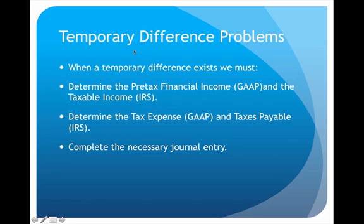Anytime we have a temporary difference there are three main things we have to do. First, calculate income in two versions: pre-tax financial income according to GAAP and taxable income according to the IRS. Second, calculate the amount of tax in two versions: tax expense according to GAAP and taxes payable according to the IRS. Third and finally, complete any necessary journal entries.